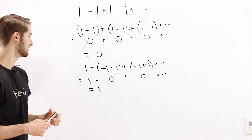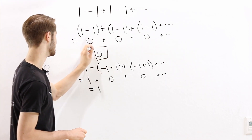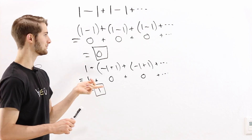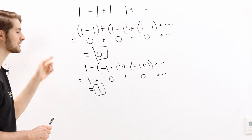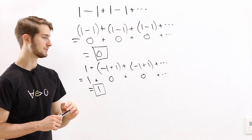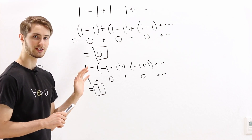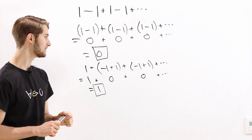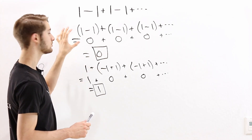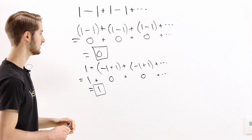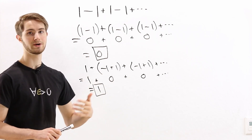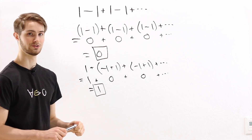But wait a minute. The first time we got 0. The second time we got 1. 0 is not equal to 1. So we just tried to evaluate the sum using grouping and we got two different answers. So something is going wrong here. In this video, I want to talk about why this grouping method for finding the sum doesn't actually give us the right answer for the series 1 minus 1 plus 1 minus 1 and so on.